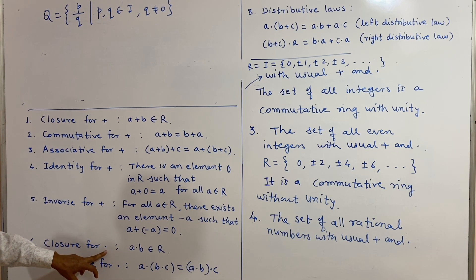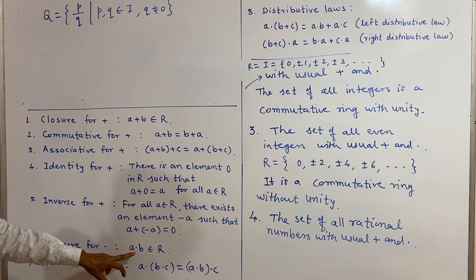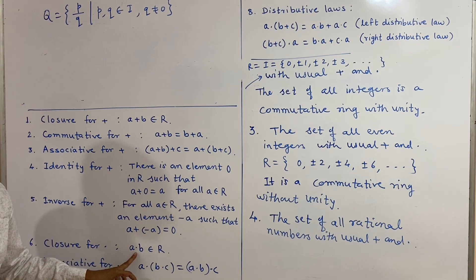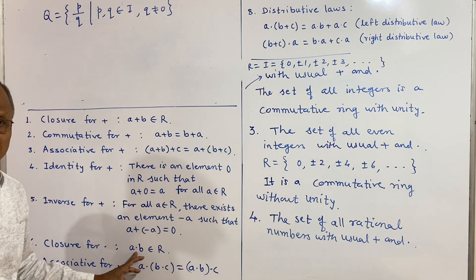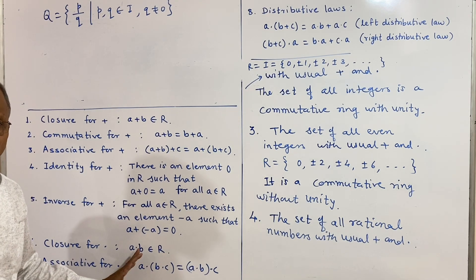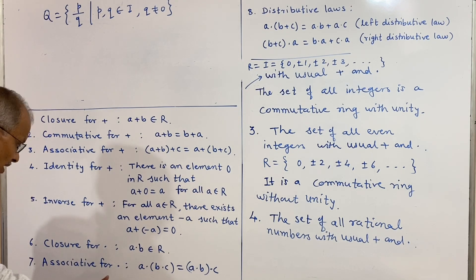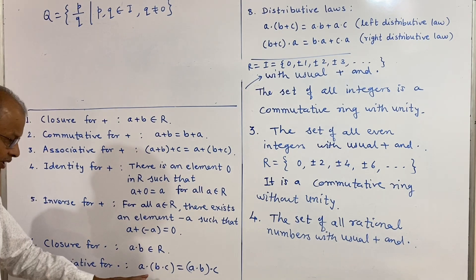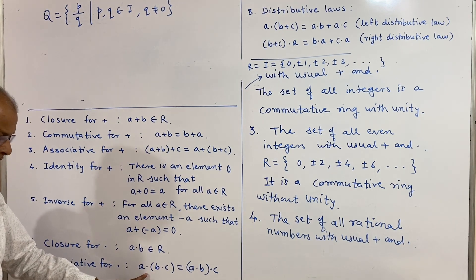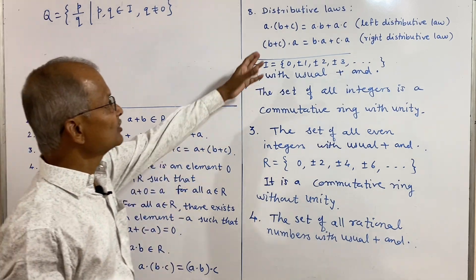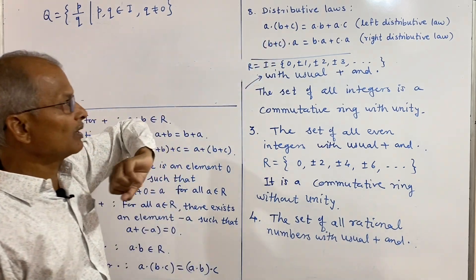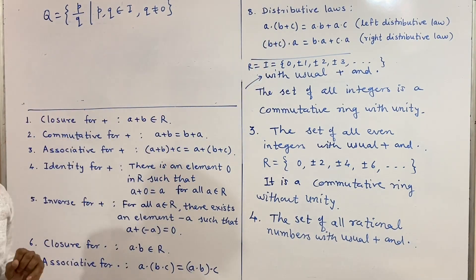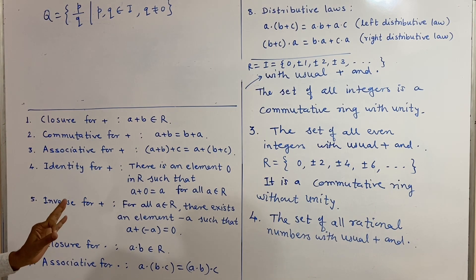The set Q is also closed under multiplication; the product of two rational numbers is again a rational number. Usual multiplication is associative, and multiplication is distributive over addition.